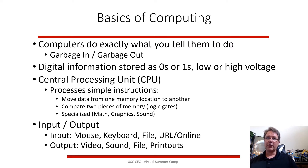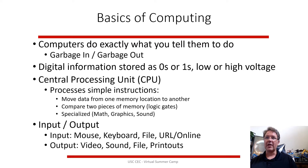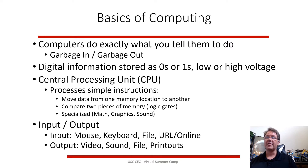Information going into the computer can come from your mouse location and clicks, your keyboard, files stored on your computer, or information from the internet through the network. It puts out information in the form of video or sound, writes to a file, or prints to the printer. That's input, output, processing information — the basic basics.